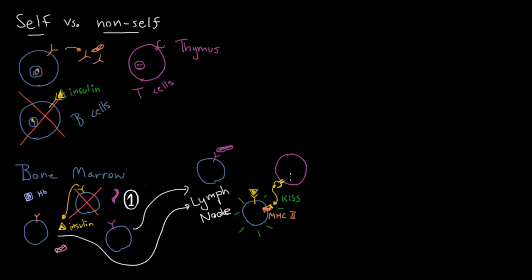This is exactly the second mechanism of defense: even if a B cell escapes that reacts to self, almost always it's also going to need a T cell that reacts to self to come and activate it. So you need both the B cell to escape the weeding out in the bone marrow and the T cell to escape the weeding out in the thymus for you to get an active B cell putting out antibodies that react to self.